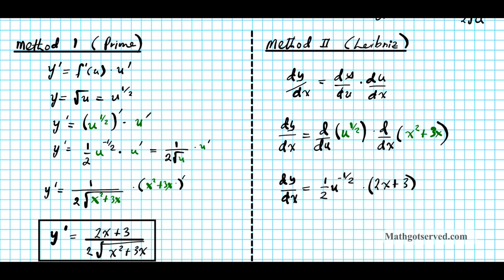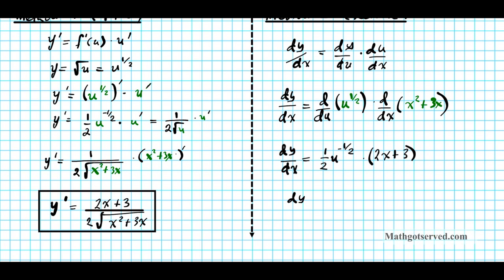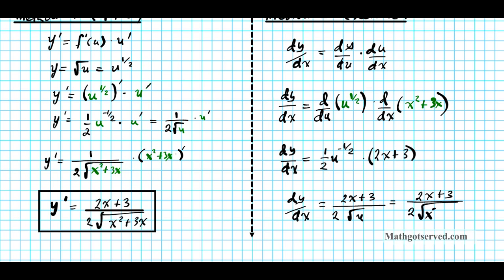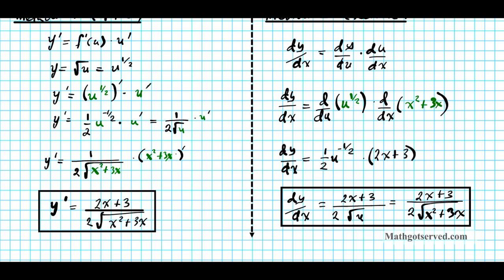We can write dy/dx as 2x plus 3 divided by 2 root u. Since u is x squared plus 3x, the final answer is 2x plus 3 divided by 2 times the square root of x squared plus 3x. So that's how you have it using the two methods — whichever one you like, you can always use.